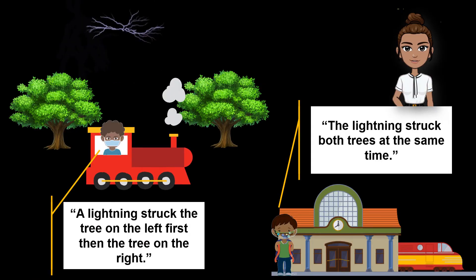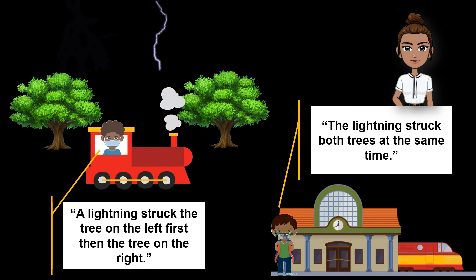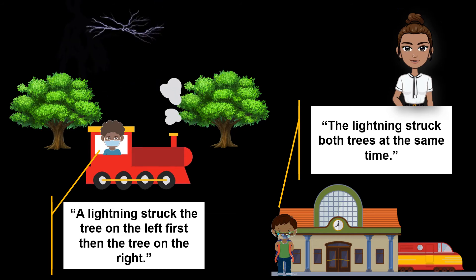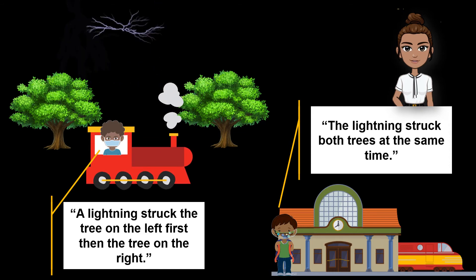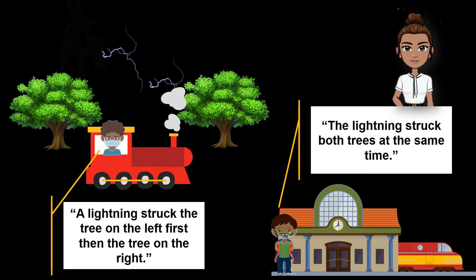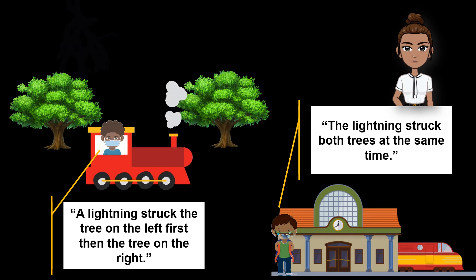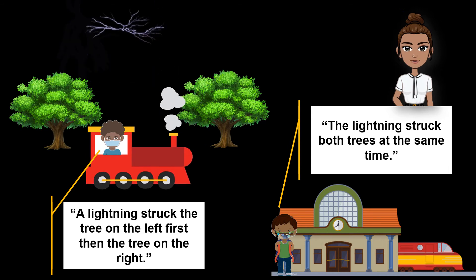Another example: a teenage boy is standing inside a train that is passing equally between two oak trees. Because the train is moving, he saw that lightning struck the tree on his left first, then the tree on the right. Another boy standing at the train platform also saw the same event, but in his viewpoint the lightning struck both trees at the same time. Although the same laws of physics apply, you must now take into account the relative transformations on time, space, matter, and energy, which become more pronounced when the relative motion between the observer and the observed event moves close to the speed of light.